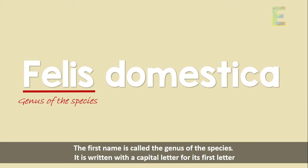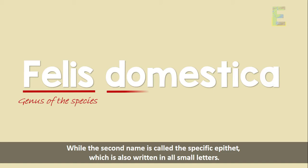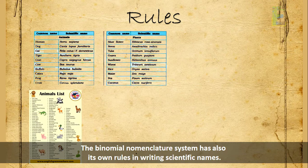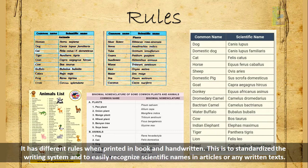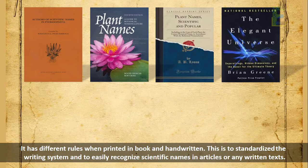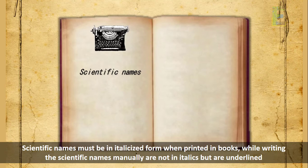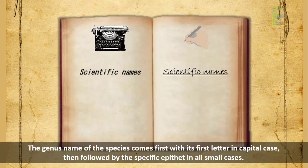The first name is called the genus of the species, written with a capital letter for its first letter. The second name is called the specific epithet, which is written in all small letters. The binomial nomenclature system also has its own rules in writing scientific names, with different rules when printed in a book versus handwritten. This is to standardize the writing system and to easily recognize scientific names in articles or any written text. Scientific names must be in italicized form when printed in books, while scientific names written manually are not in italics but are underlined.